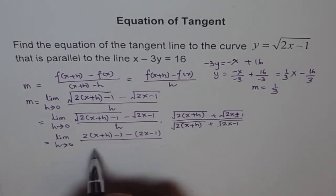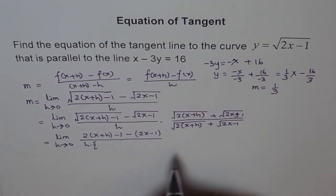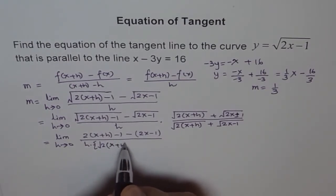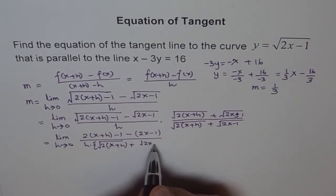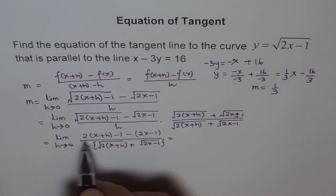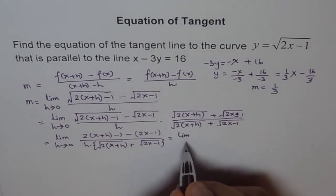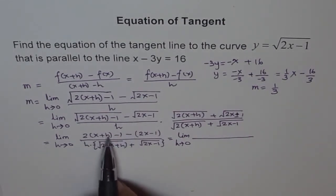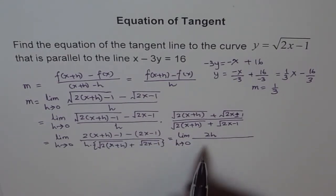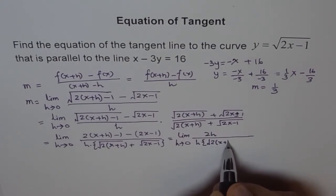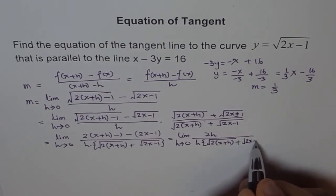After multiplying, the numerator becomes a squared minus b squared: 2(x plus h) minus 1, minus (2x minus 1). In the denominator we have h times the quantity square root of 2(x plus h) minus 1 plus square root of 2x minus 1. Opening the numerator: 2x minus 2x cancels to 0, and minus 1 minus minus 1 cancels, leaving 2h in the numerator.